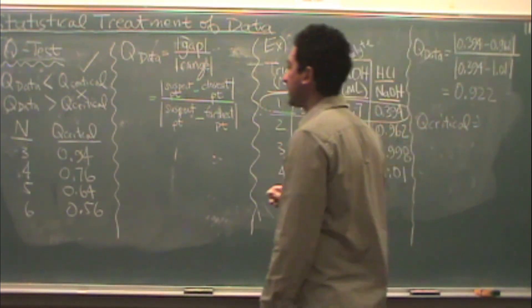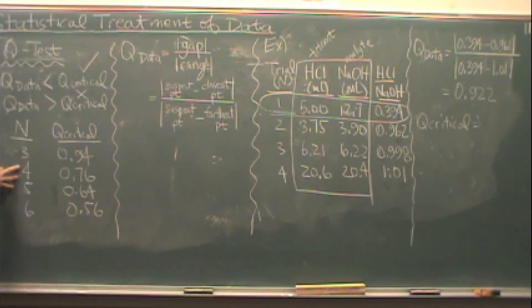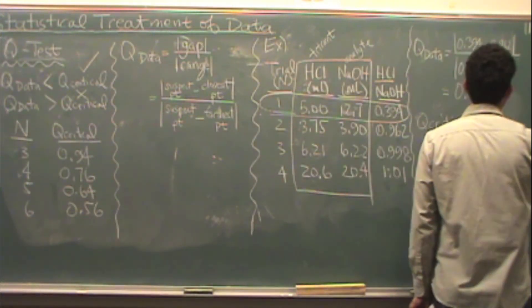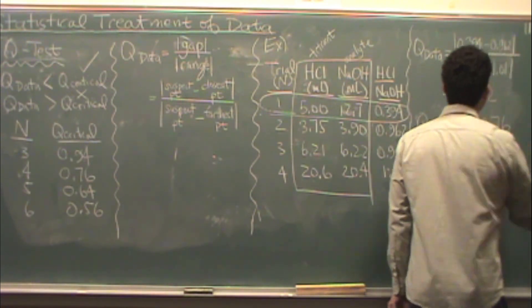It's a tabulated value. I just look in the table. In this case I have N equals 4, the number of trials of 4. That's 0.76.